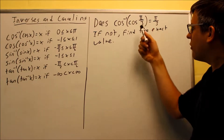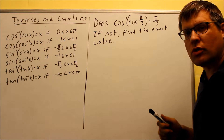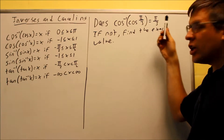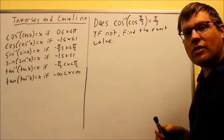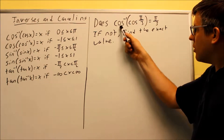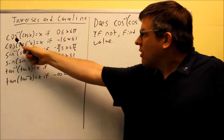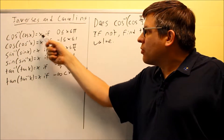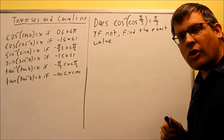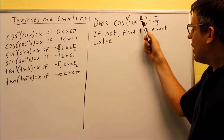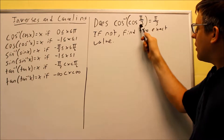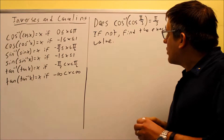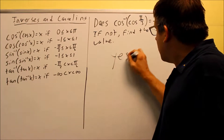Does inverse cosine of cosine of π/3 equal π/3? This is another one where it's either going to equal π/3, or if it doesn't, we've got to find the exact value. If I look at the inverse cosine on the outside, it says I can cancel it out and it equals x, but only if x is between 0 and π. In this case, π/3 is a number between 0 and π, so that does work.